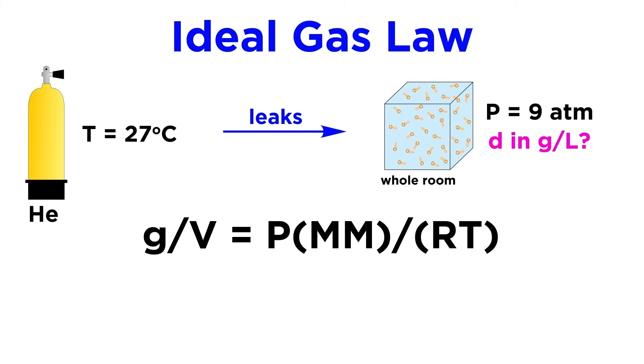Now we have this, mass over volume equals pressure times molar mass over the gas constant times temperature. We now have everything we need. Let's plug in 9 atmospheres for pressure, 4 grams per mole for the molar mass of helium, our usual 0.08206 with its units for the gas constant.